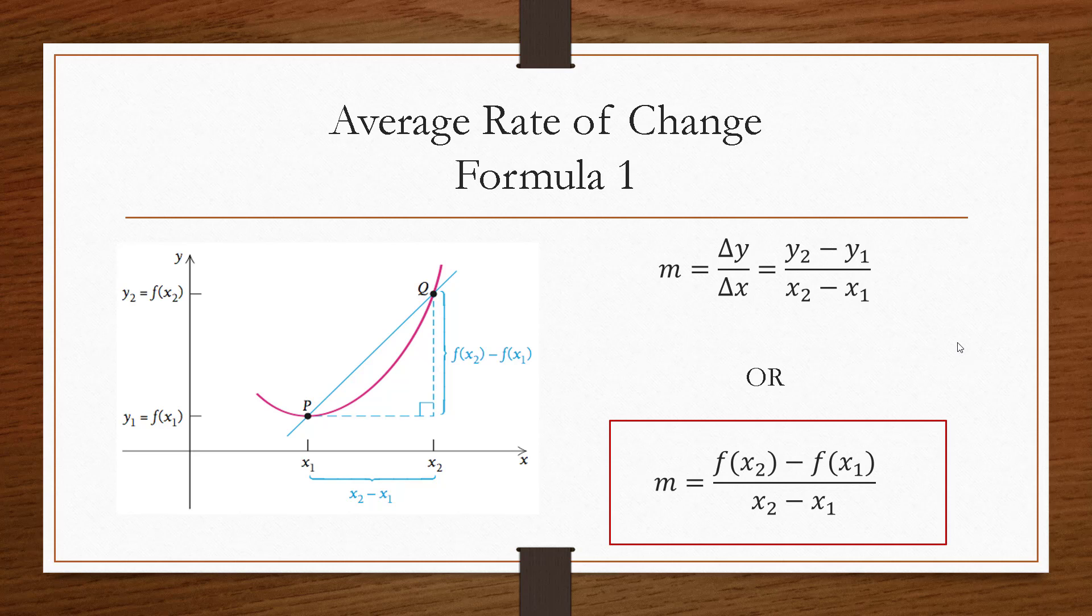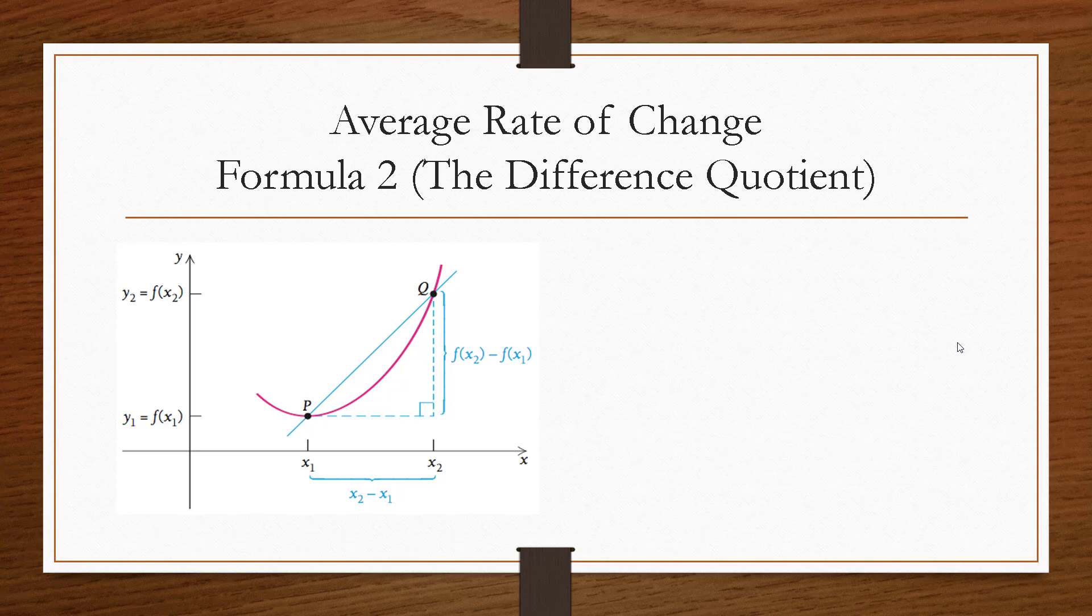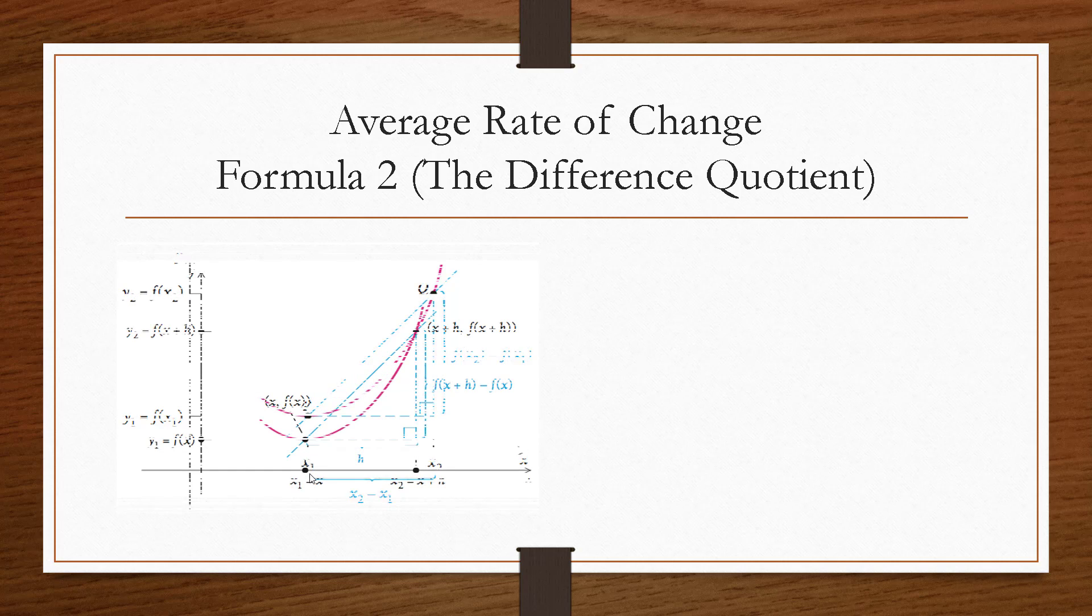We can also express this average rate of change formula slightly differently. Suppose instead that we weren't told what x1 and x2 were. We were told maybe what x1 was, but then we were told just what the change in x was. So let's redefine these symbols. So our first point, instead of calling it x1, y1, we'll call it x and f of x.